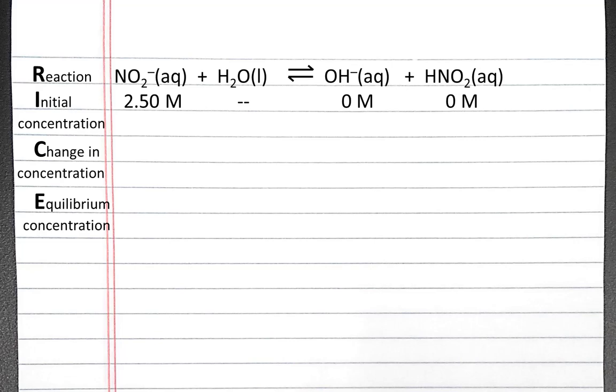Since we only have reactant and no product, we'll convert some reactant to product, so our change in concentration of nitrite will be negative X, and our change in concentrations of hydroxide and nitrous acid will be plus X. We can fill in our equilibrium concentration by adding the initial concentration with the change in concentration.